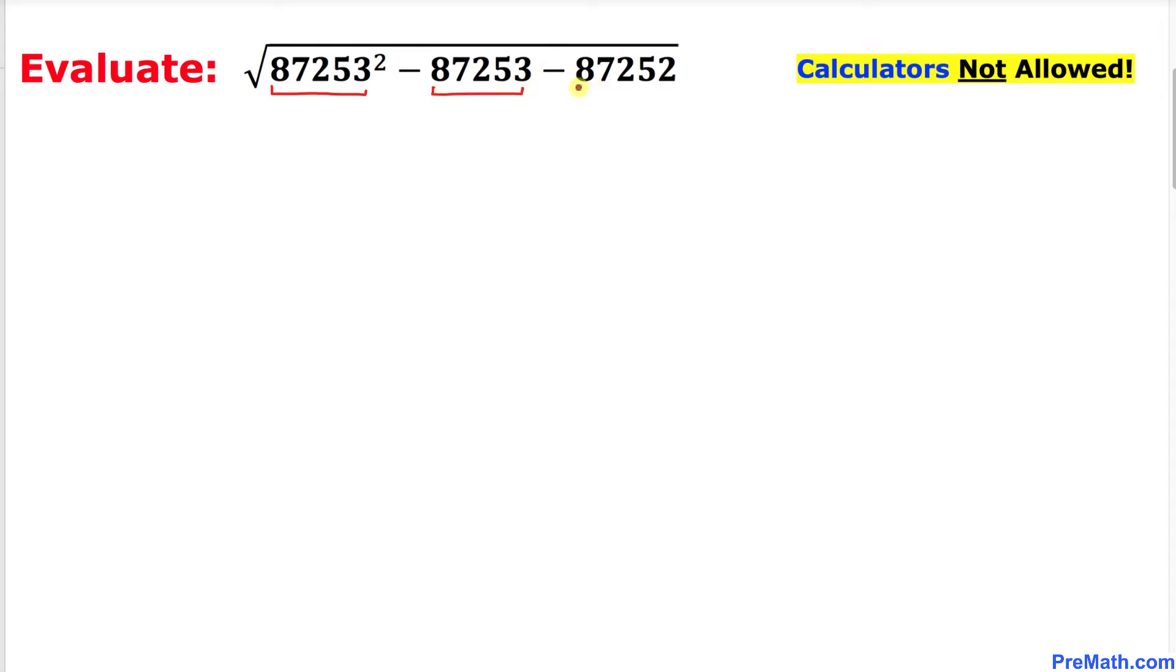However, this next number is one less than this previous number, so I can tweak this one as 87253 minus 1. And here in this next step I have replaced this number by 87253 minus 1, and the rest are the same numbers.